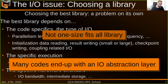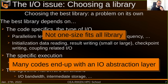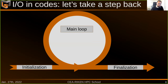In many codes we had to work with at Maison de la Simulation, we saw the codes implement an IO abstraction layer to be able to switch between various IO libraries. And that's something we see in a lot of codes. If we take a step back and look at simulation codes, they usually look like the following structure.